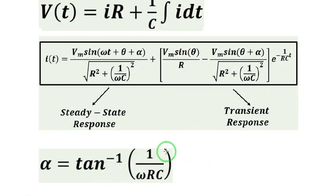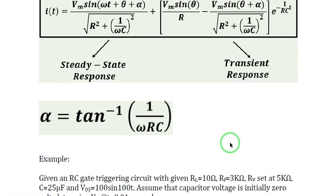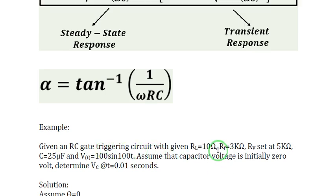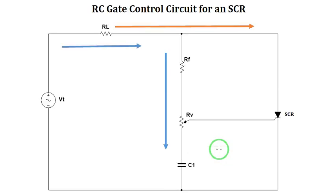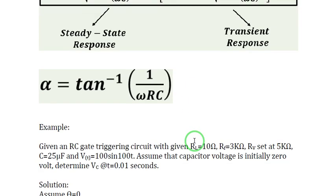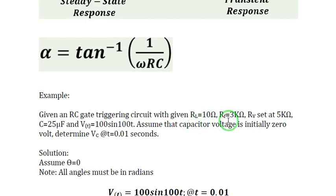Now, if we have here an example: we have an RC gate triggering circuit similar to the one we presented. Based on this circuit, these are the values of the components. Load resistance is 10 ohms, fixed resistance is 3 kilo ohms, variable resistor is set at 5k, capacitor is 25 microfarad.